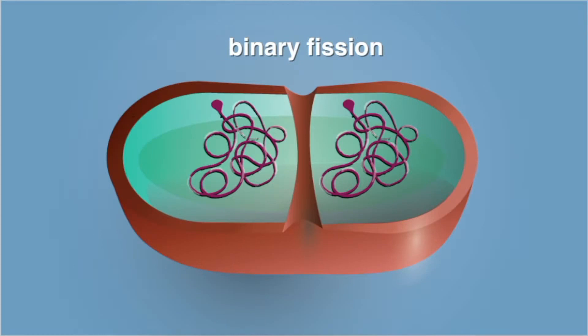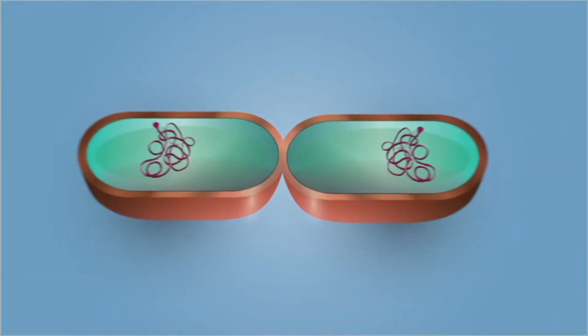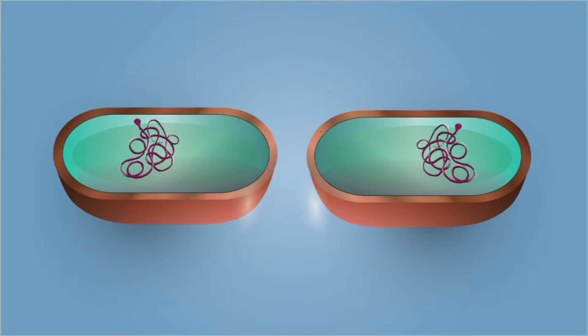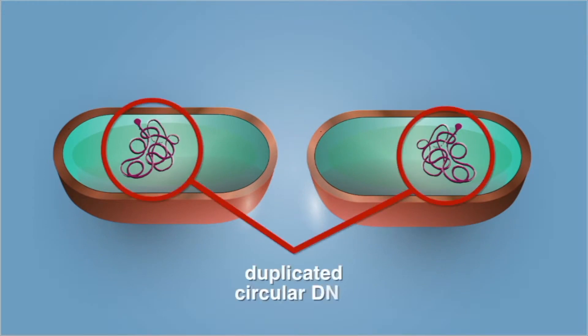Binary fission is the prokaryote form of asexual reproduction. After the cytoplasm divides, each daughter cell synthesizes a new cell wall, creating two identical cells. Binary fission results in two cells that each contain one copy of the original circular DNA.